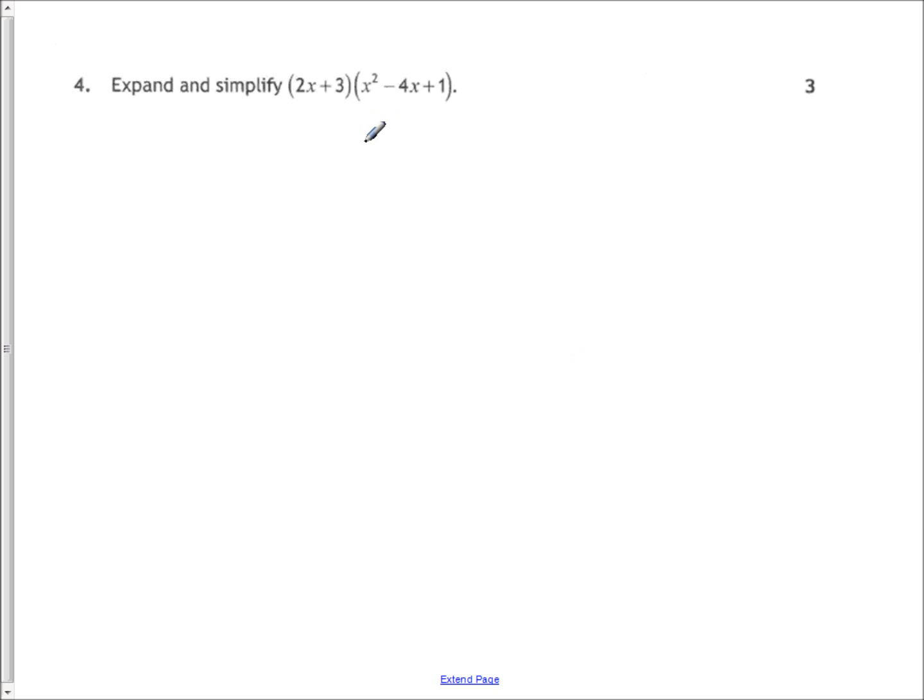Some straightforward algebra, all you're doing is multiplying the contents of the second bracket, each term by 2x first of all, and then each term by the three. So once you've done that, you'll get two marks, and then simplify it all by collecting like terms, and you've got your three marks then in the bag.